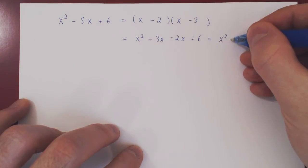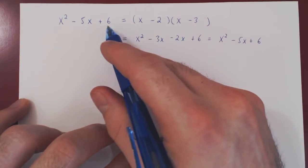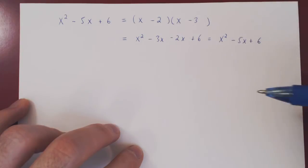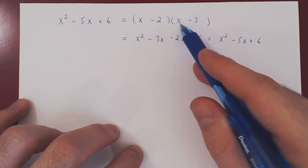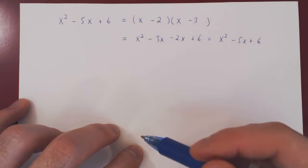So this is more efficient than the quadratic formula, so always try and factor by inspection. If you can't find these two numbers, then fall back on the quadratic formula.